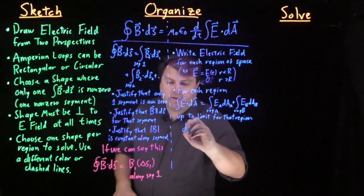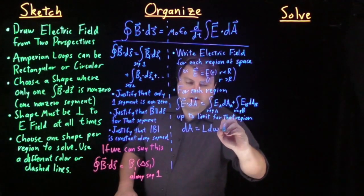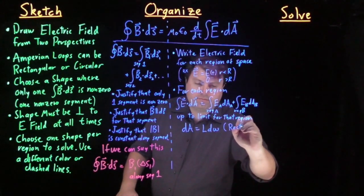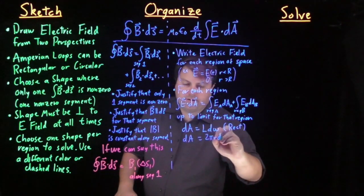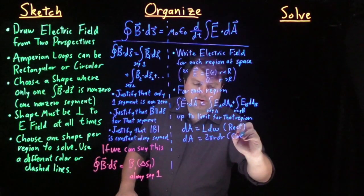Just a reminder that our dA is L·dW for rectangular and our dA is 2πr·dr for circular.